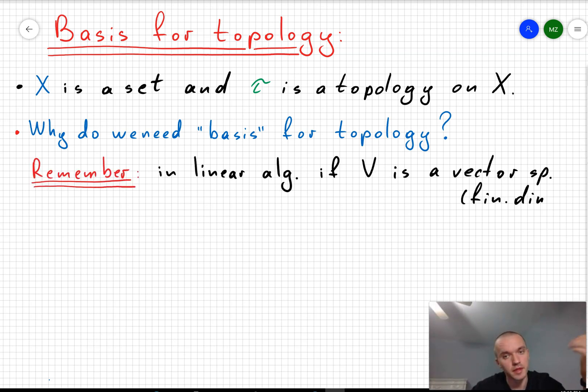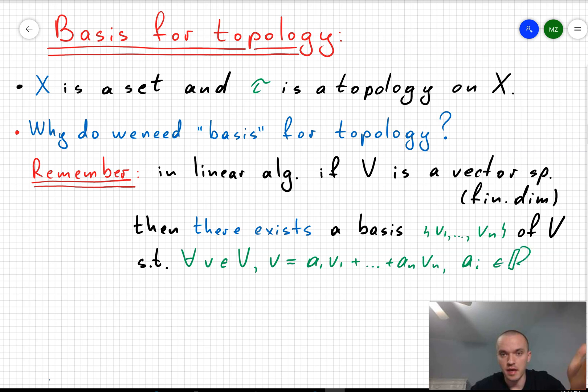Take some vector space V. Then we know that for that vector space V there is always a basis which consists of vectors v1 to vn. And what does it mean like a basis? It means if I'm going to take any vector v, then I can write my vector v as a linear combination of real coefficients of the basis elements.